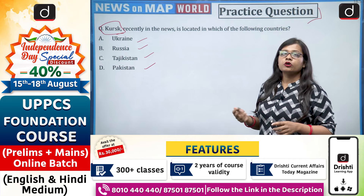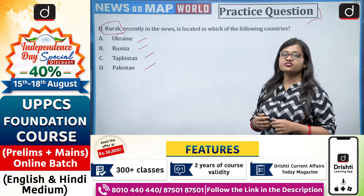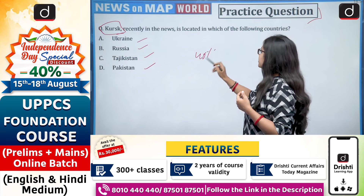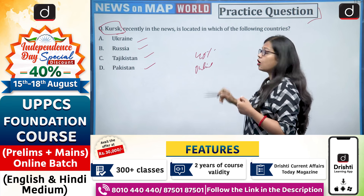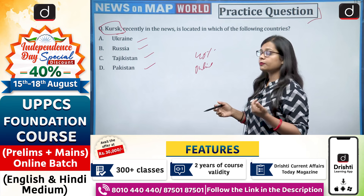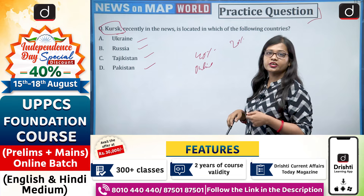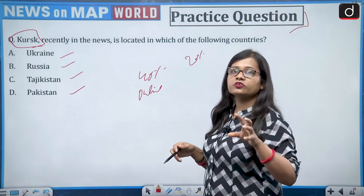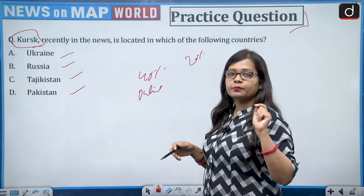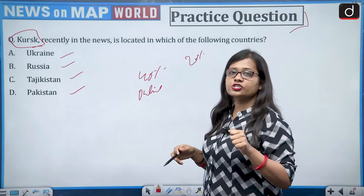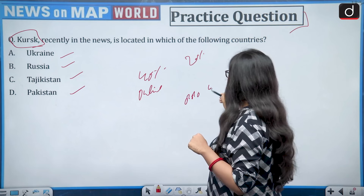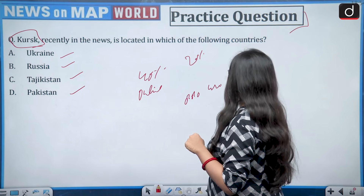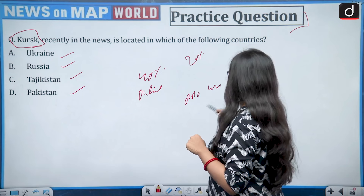On the occasion of Independence Day, Drishti IAS has come up with a 40% discount on all online courses, pen drive courses, test series, and DLP. You can also get a 20% discount on Drishti IAS books — the link is in the description box. You can download the Drishti Learning App or call us at 8010-440-440. Thank you for watching — keep reading, keep writing, and keep subscribing!